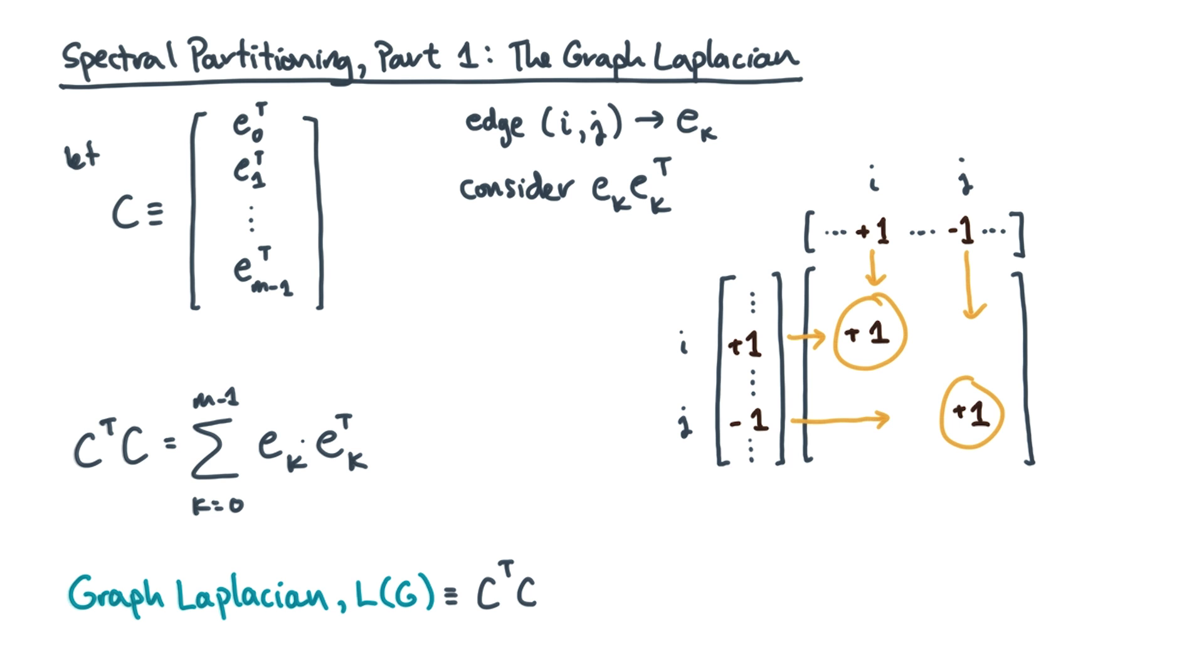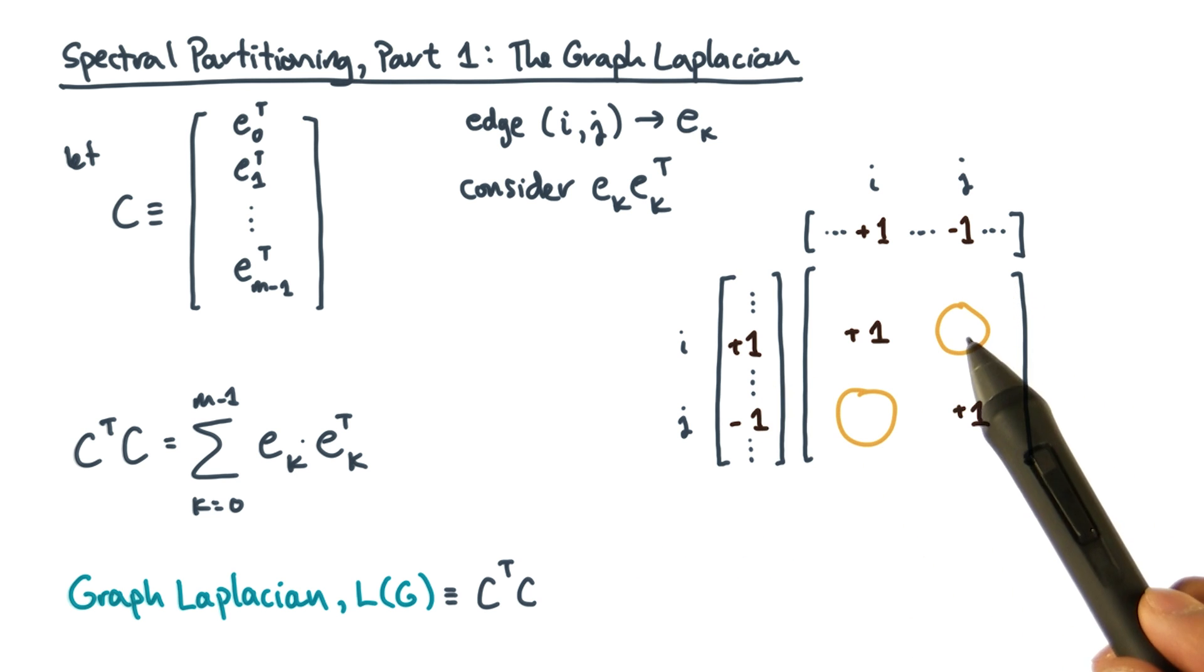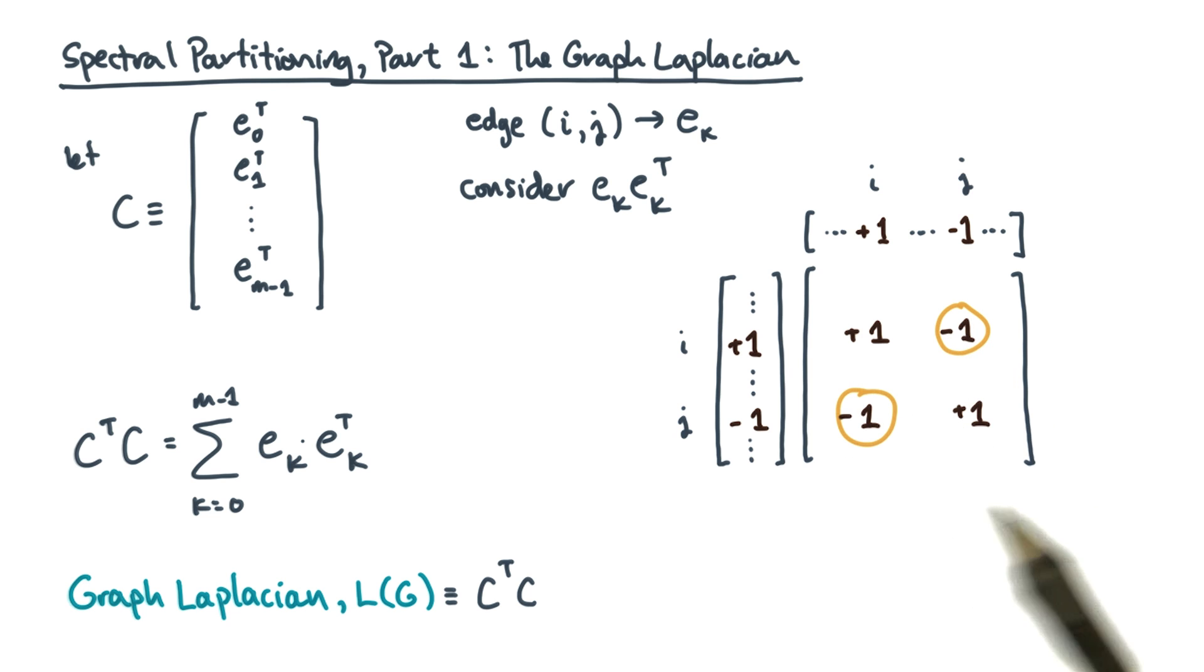That's the diagonals. What about the off diagonals? The off diagonals will always multiply a positive one times a negative one. In effect, the off diagonals indicate the presence of an edge.